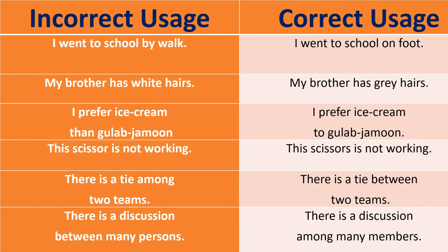'I went to school by walk' — correct: 'I went to school on foot.' 'My brother has white hairs' — correct: 'my brother has gray hairs.' 'I prefer ice cream than gulab jamun' — after 'prefer' we use 'to': 'I prefer ice cream to gulab jamun.' 'This scissors is not working' — 'scissors' is a plural noun, so: 'These scissors are not working.'